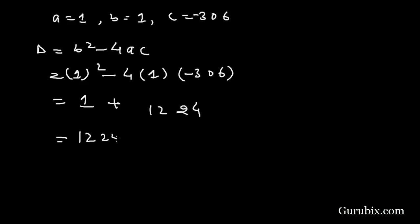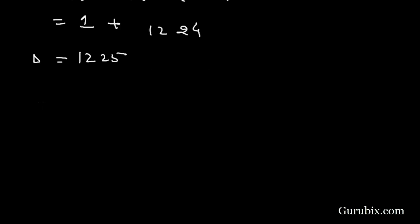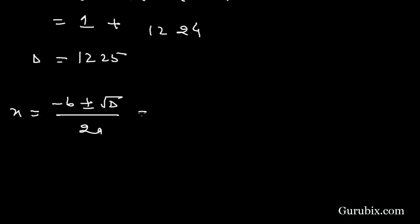Now we find the values of x using the quadratic formula: x equals minus b plus or minus root of D over 2a. Since b is 1, D is 1225, and a is 1, we need to find the square root of 1225.